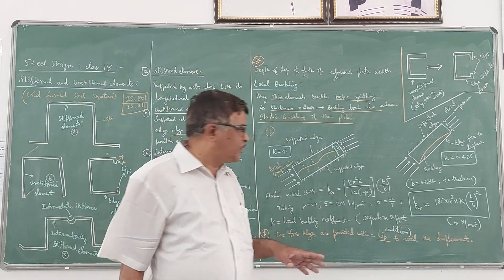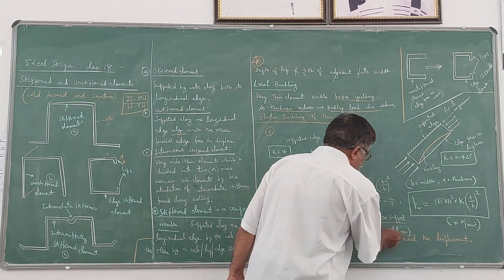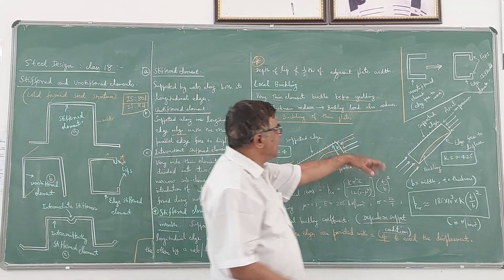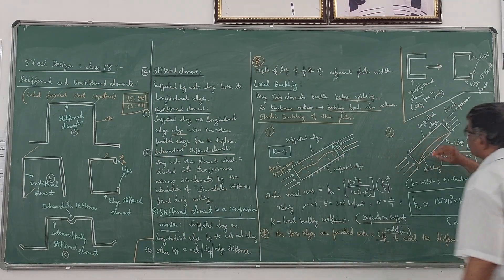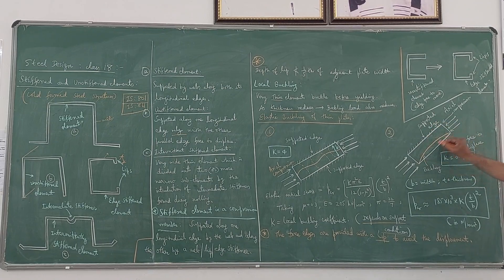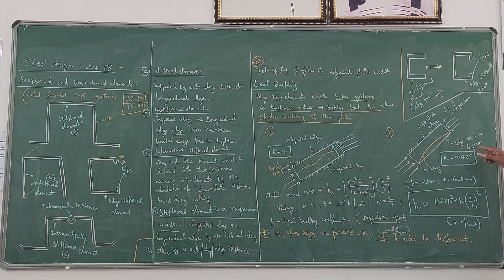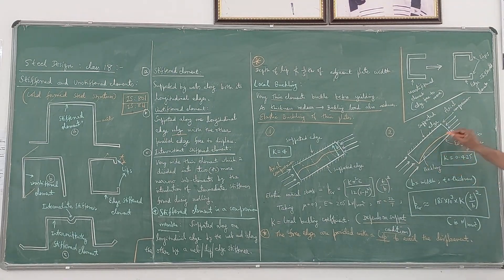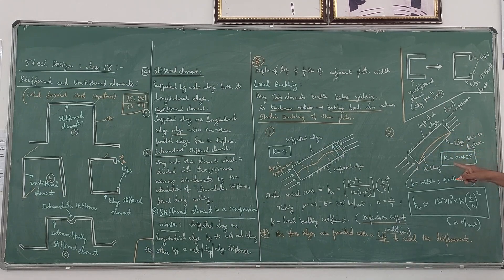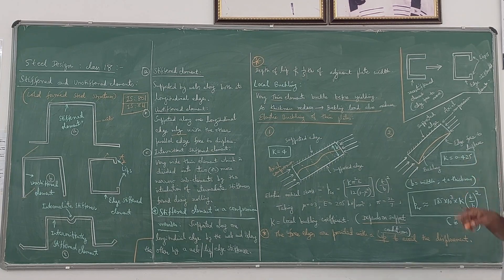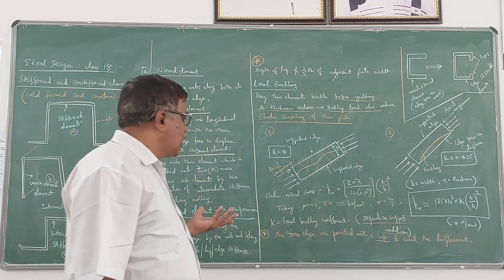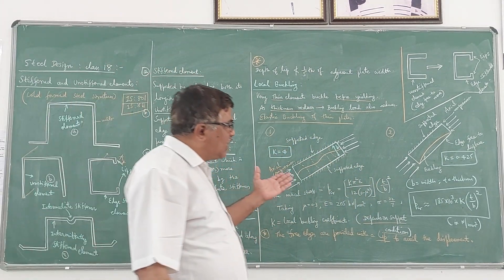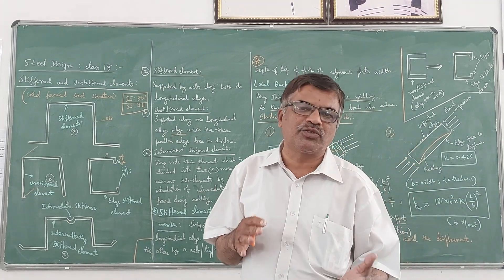The K value depends on the support conditions. In the first case with both edges supported, the value of K is the highest: K = 4. In the second case, the plate is supported on one edge only and the other edge is free to displace. In that case the buckling coefficient value is K = 0.425. If the buckling coefficient value is high, it can take more load; if it reduces, the buckling load capacity also reduces.